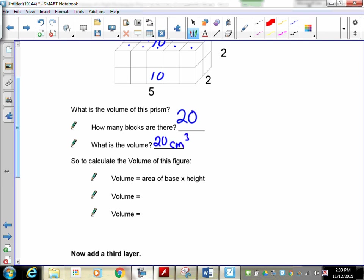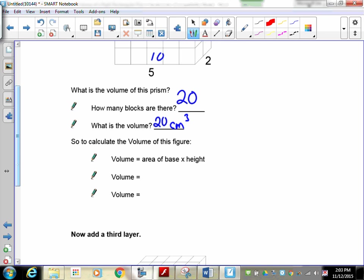The volume is 20 centimeter cubes. How did we find the volume? We found the area of the base, which is 5x2, and we multiplied by its height, which is now 2 stacks tall. So 5x2 is 10, and 10 times 2 is 20.